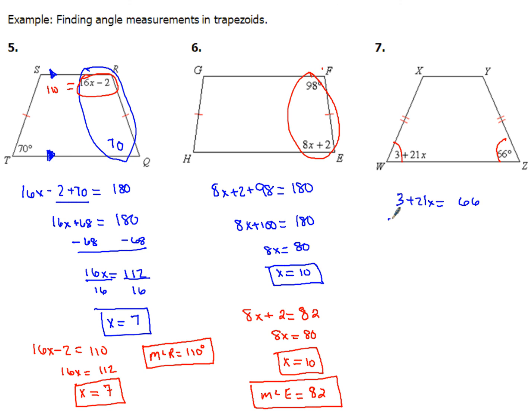So if I subtract 3 on both sides, I'll get 21x is equal to 63. Then when you divide both sides by 21, you end up with a value of 3 for x. And that's it.